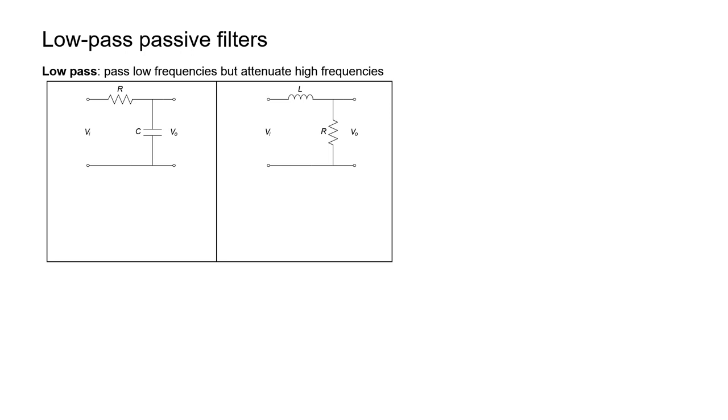I'm going to derive the transfer function, in other words the output voltage divided by the input voltage. Let's start here with the circuit on the left. I'm going to be using voltage division. In the numerator we have the impedance of the capacitor and in the denominator we have the impedance of the whole circuit.